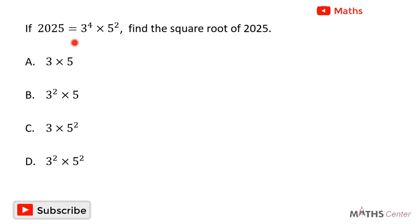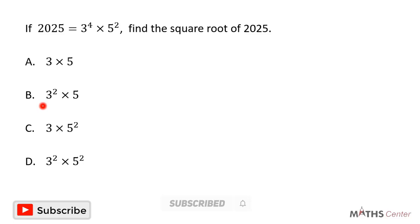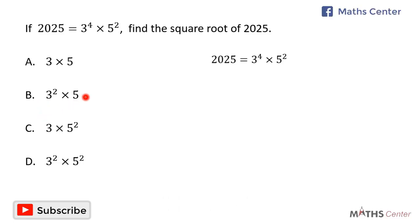If 2025 is equal to 3 exponent 4 times 5 exponent 2, find the square root of 2025. This is a multiple choice question, and so we will solve the question, and after that we will pick the correct option. We have 2025 is equal to 3 exponent 4 times 5 exponent 2, and we are going to find the square root of 2025.